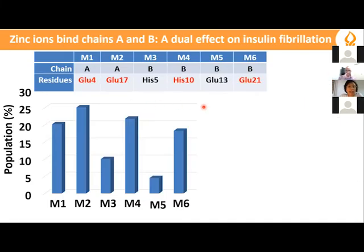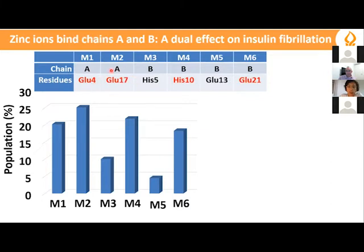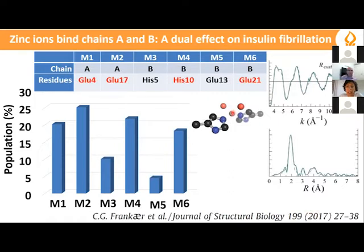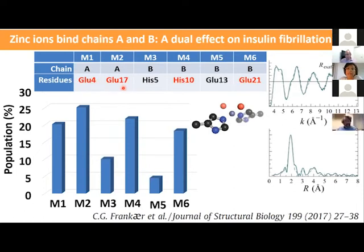We calculated the conformational energies of all six models with different zinc binding sites and also calculated populations, which show the same trend. We found that zinc ions prefer to bind in chain A to glutamic 4 and glutamic 17, and in chain B to histidine 10 and glutamic 21. Notably, prior XAS spectra showed that histidine 10 in insulin fibrils binds zinc ions with two water molecules, consistent with our finding of this specific binding site. We also found other possible binding cases in insulin fibrils.